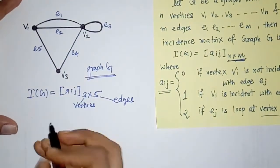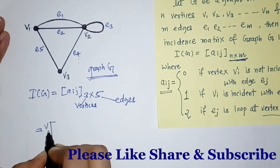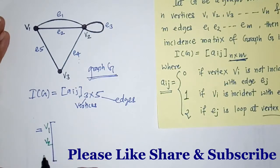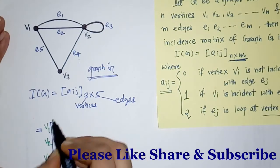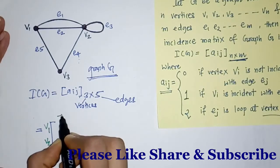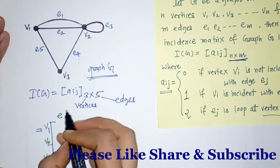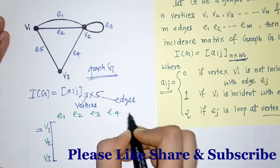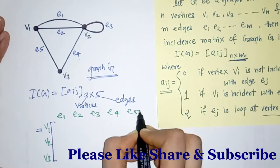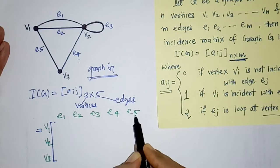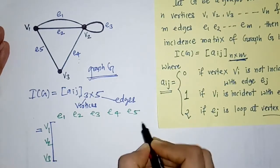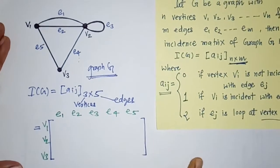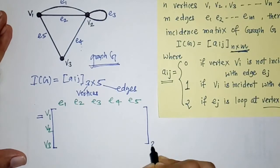First we will write v1, v2, v3 as the rows, and the total edges e1, e2, e3, e4, and e5 as the columns of this matrix. So this matrix is of order 3 by 5.